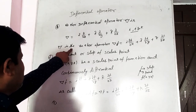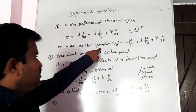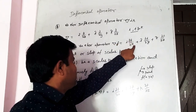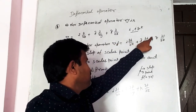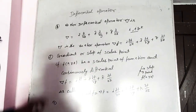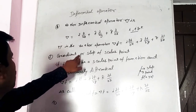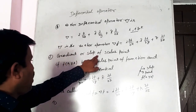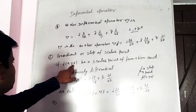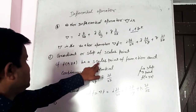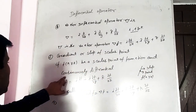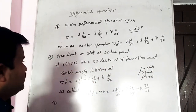If del is the vector operator, then del f is equal to i ∂f/∂x + j ∂f/∂y + k ∂f/∂z. Number 2: gradient or slope of a scalar point. If f(x, y, z) is a scalar point function and is continuously differentiable.